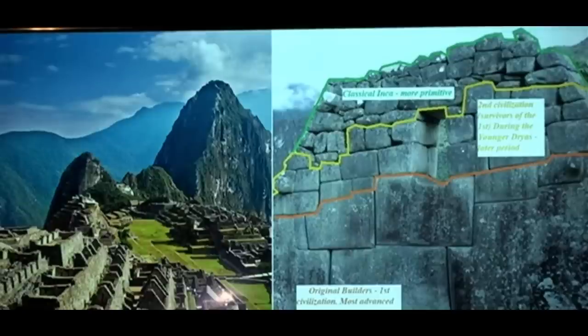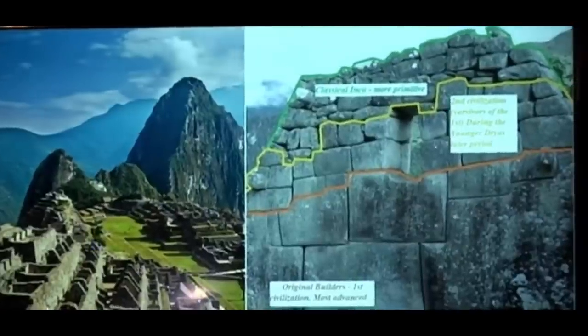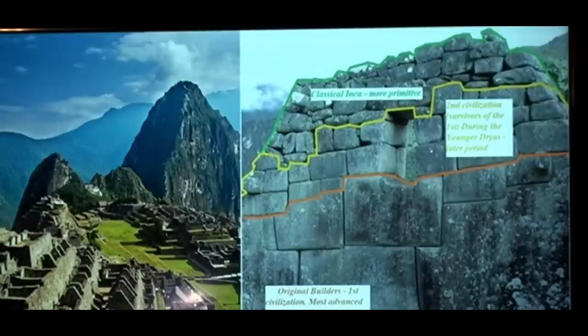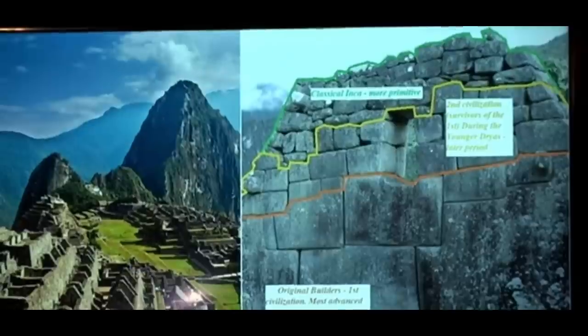The image on the right is probably the best example of showing the different phases of civilizations that I know of. This wall next to the Torreon in Machu Picchu shows three sequences of different civilizations that came and went. We're told that everything archaeologically is in a linear form — starts simple and primitive and becomes more advanced later. But what we're finding around the world is the complete opposite: the highest level of sophistication is on the bottom in almost every case, and the more you get to the top, the more primitive it gets.